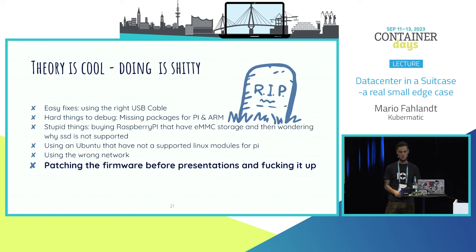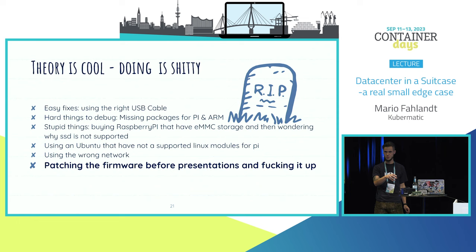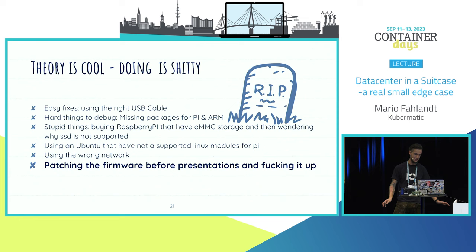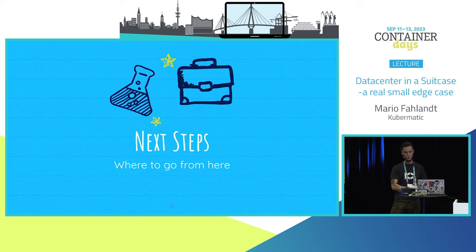I'm now waiting for the new computing modules that Turing Pi themselves released - 8 cores and 32 gigabytes of memory per module at about 220 euros per module, which is pretty cool. The next issue was wrong network configuration. And the worst mess-up was yesterday evening patching firmware. Never change a running system.